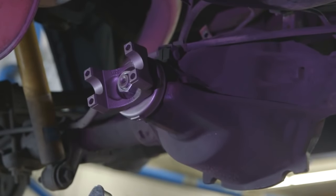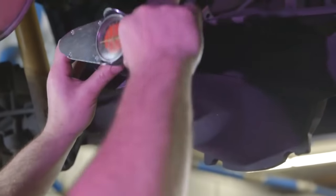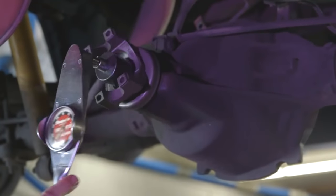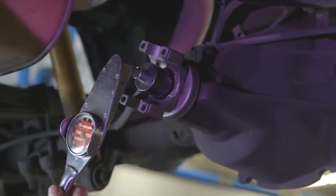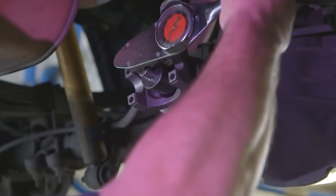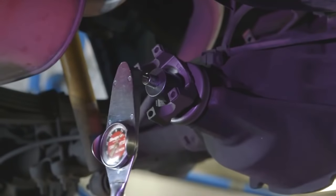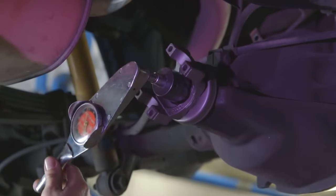Using a dial style inch pound torque wrench, check the pre-load as you go. Continue to tighten until you reach the desired pinion bearing pre-load. If you over torque the pinion nut and get too much pre-load, you will need to replace the crush sleeve and start again.